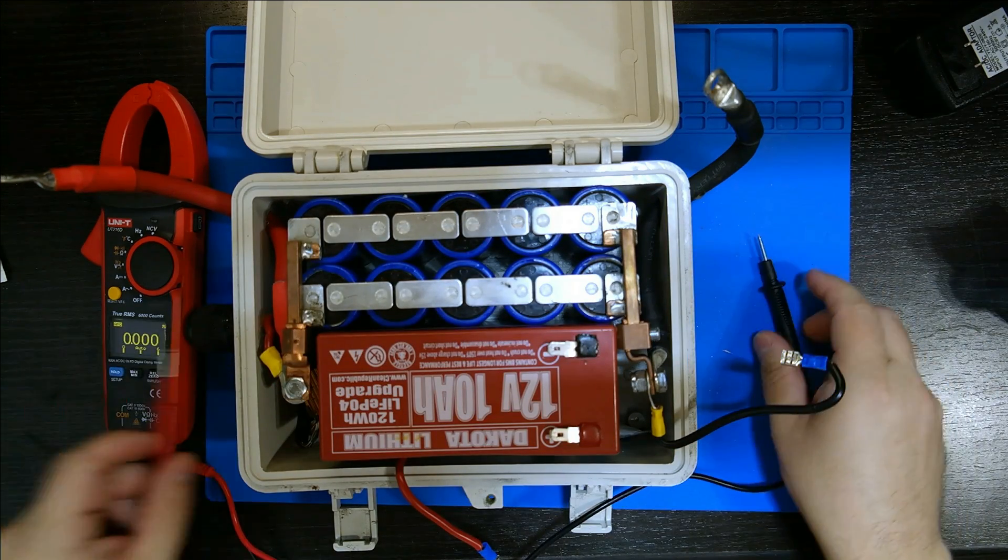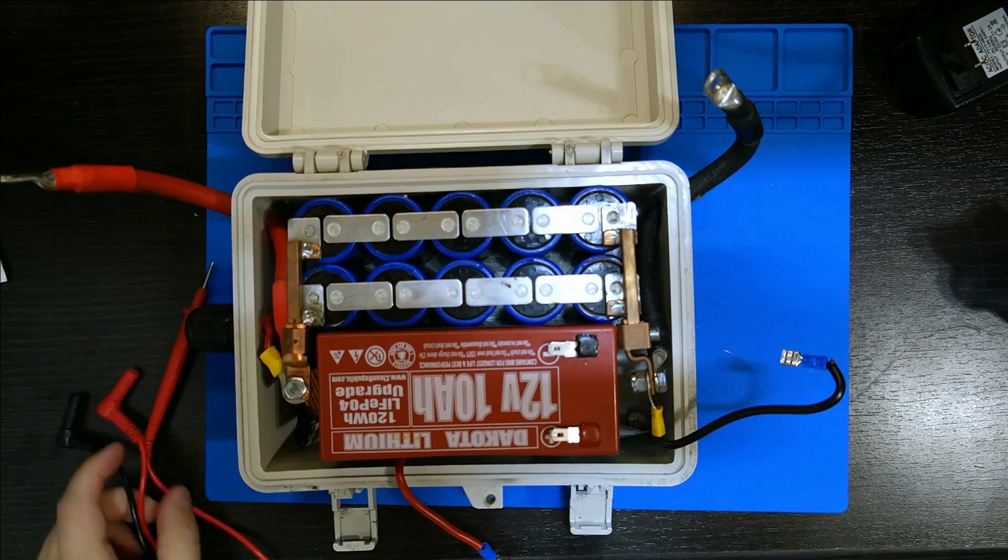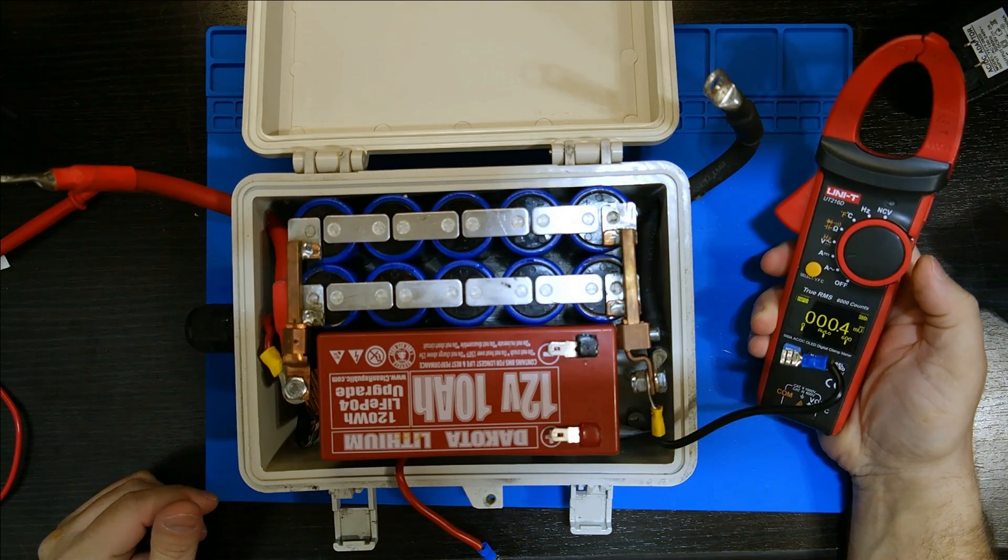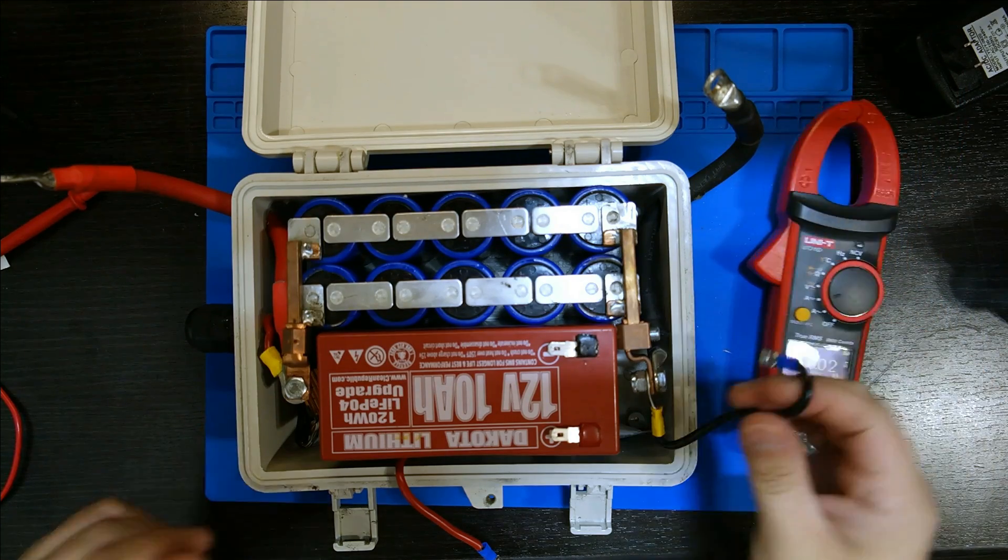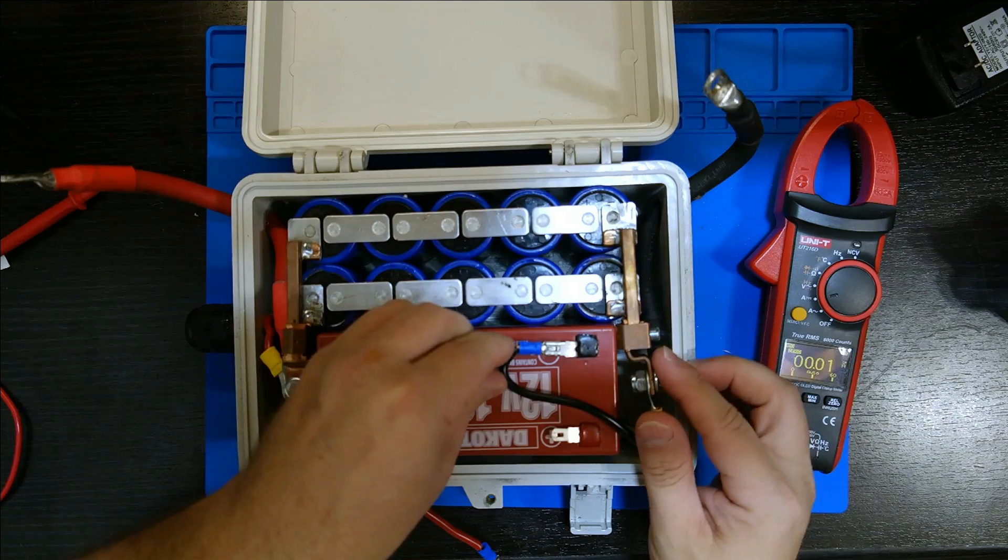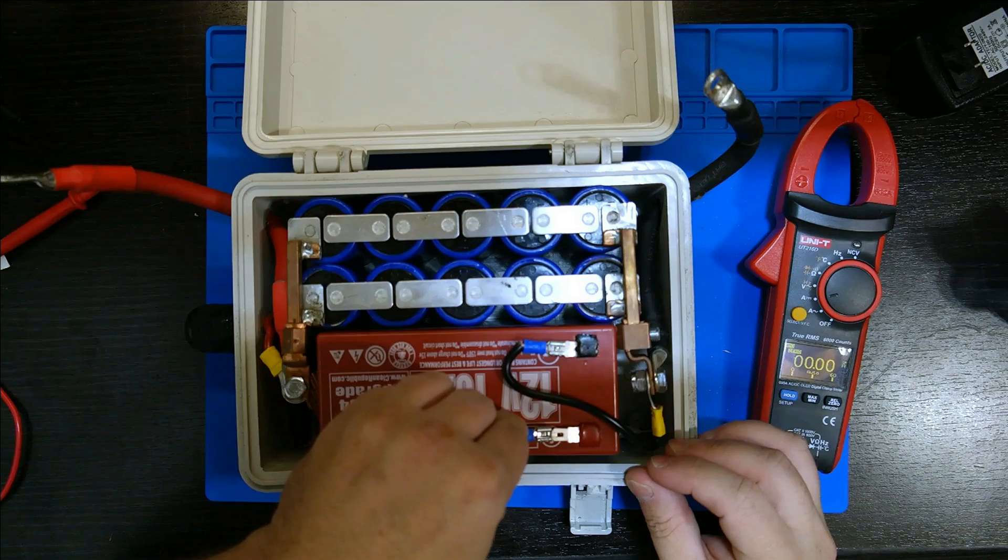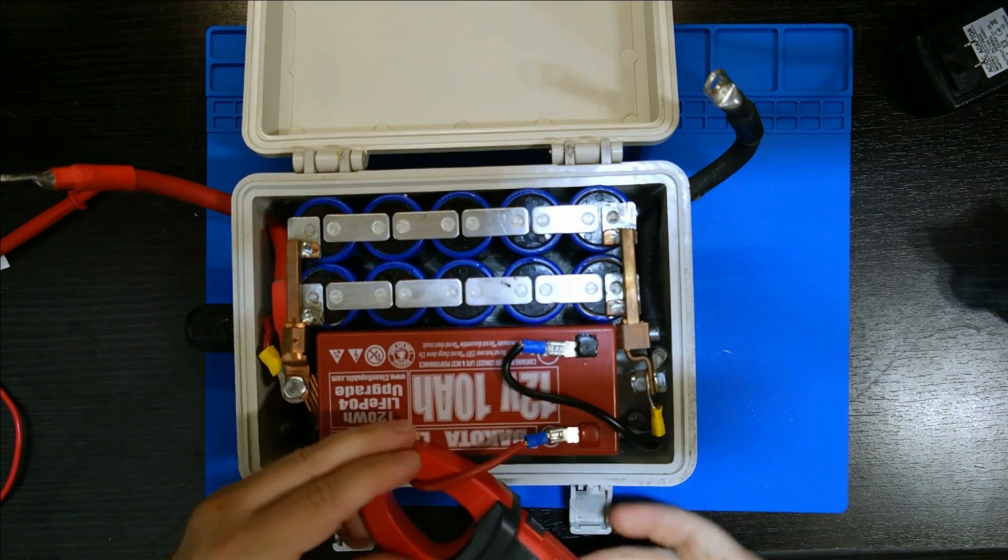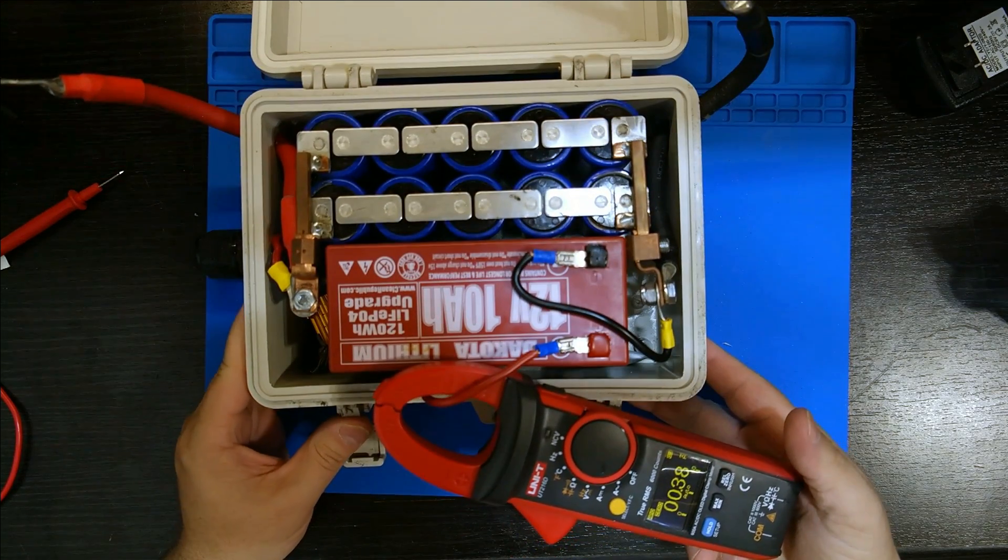Let's turn power supply off. Let's connect these leads and switch this over. Let's go back to DC amperage, zero out. Let's connect my negative side and the positive side. Half an amp. Not even a half an amp just so they can balance themselves out now.